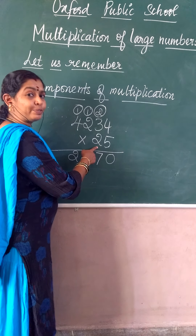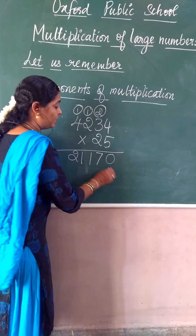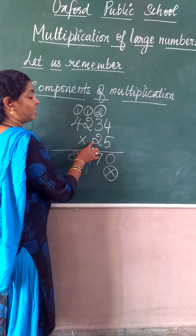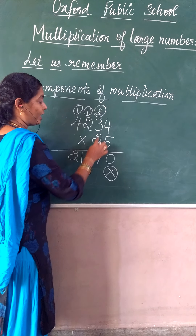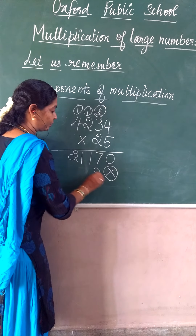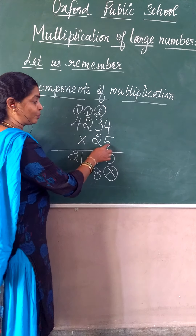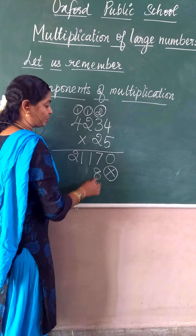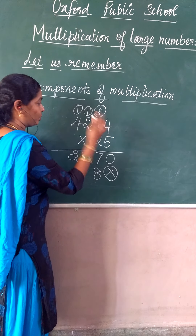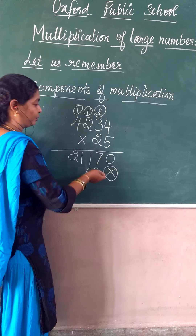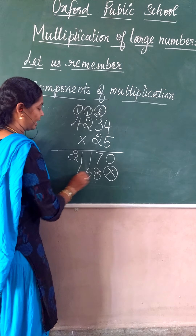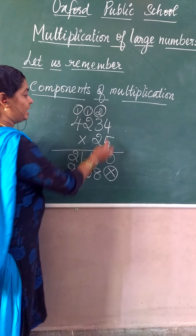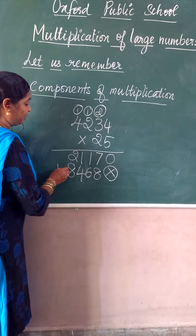Now I have to go to the tens place value to multiply. The ones place multiplication is over, so I am going to put a cross here — or instead of a cross you can put 0. 2 times 4 is 8. Put the result in the tens place, not the ones place, because the ones place value is finished. 2 times 3 is 6, no carry forward. 2 times 2 is 4, no carry forward. So there is no carrying forward in this second row.